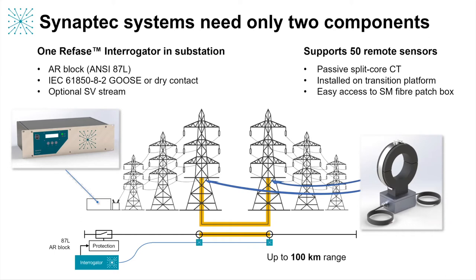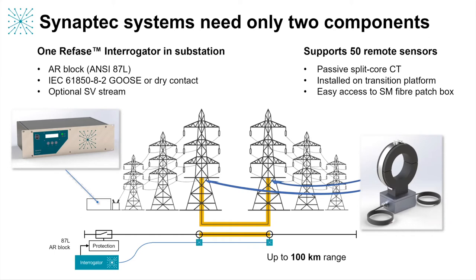Optionally, we can also make available high resolution sample value measurements from all sensors to the operator, time-stamped with respect to GPS. It's also important to note that if there's a loss of time synchronization — if the GPS receiver is malfunctioning — all the measurements performed by the interrogator remain in relative sync, so the monitoring scheme is not compromised and still operates fully. These sensors are completely passive, using Synaptic's unique and patent-protected optical measurement technology. In contrast to other fiber technologies, we use an industry standard split core CT to perform the primary conversion.